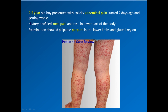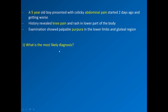Assalamu alaikum, this is Dr. Abdul Aziz Yusuf with a pediatric case review. This is the new case today. A five-year-old boy presented with colicky abdominal pain that started two days ago and is getting worse. History revealed knee pain and a rash in the lower part of the body. Examination showed palpable purpura in the lower limbs and the gluteal region. So what is the most likely diagnosis?